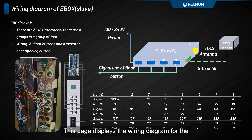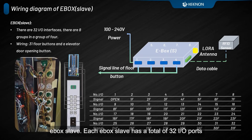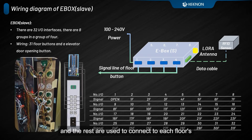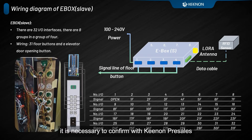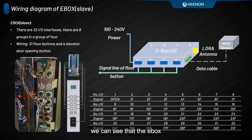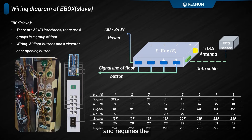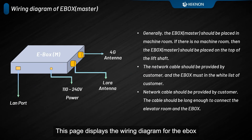This page displays the wiring diagram for the EBOX slave. Each EBOX slave has a total of 32 I/O ports, with the first one used for the door open signal, and the rest used to connect to each floor's buttons. For the standard EBOX solution, we recommend connecting a maximum of 28 floors. For scenarios with more than 28 floors, it is necessary to confirm with Kenan's pre-sales team in advance. In addition to power supply and I/O ports, the EBOX slave also has interfaces for connecting an RFID sensor and requires the placement of a LoRa antenna.